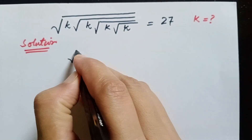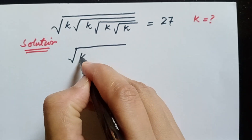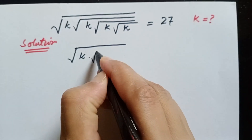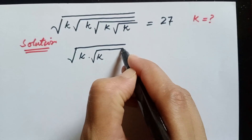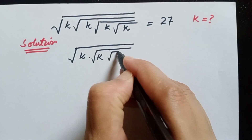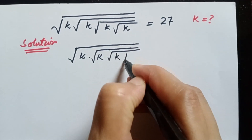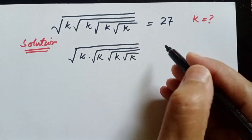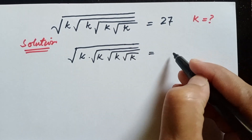Square root of k times square root of k times square root of k times square root of k is equal to 27.